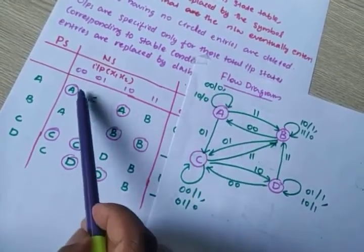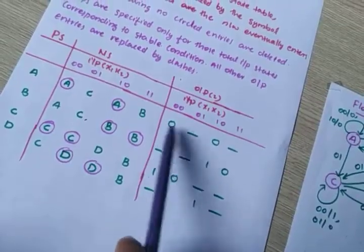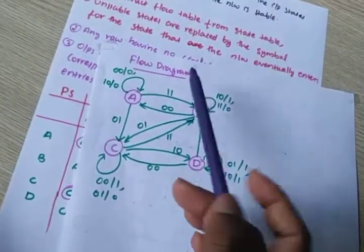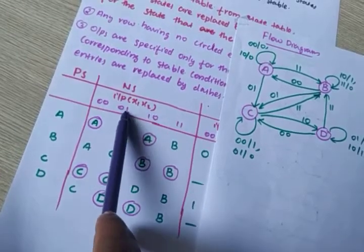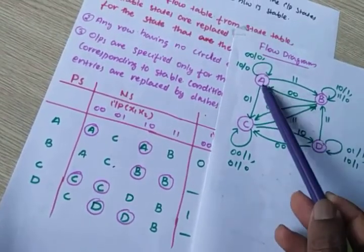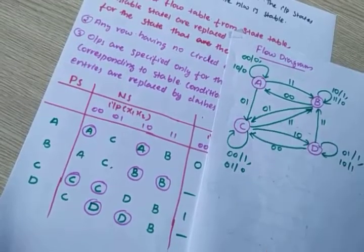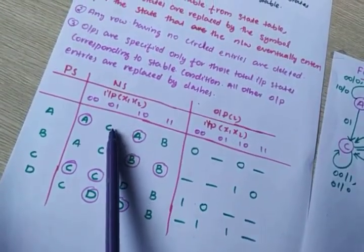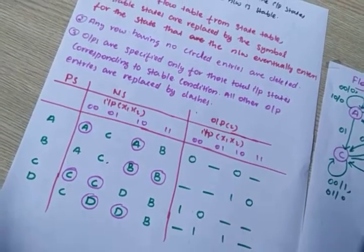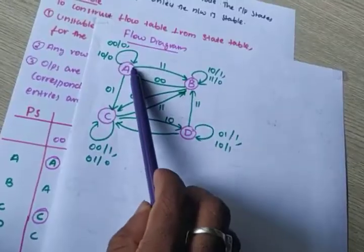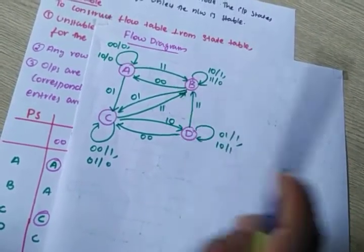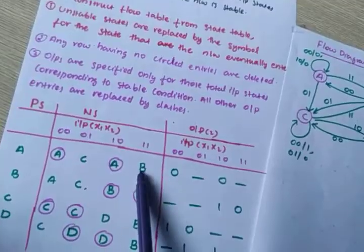What is the output here for these two? Output is 0,0. So output is 0. Here also output is 0. What about the A, 1,0,1 combination? It goes to C. Output is dash — why? Because for this state it is unstable, so it is represented by a dash. For A, 1,1, it is going to B. Output is dash because it is not a stable state.